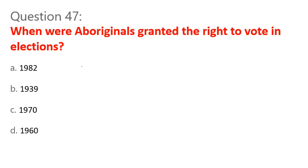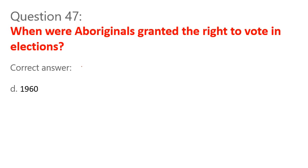Question 47. When were aboriginals granted the right to vote in elections? A. 1982. B. 1939. C. 1970. D. 1960. Correct answer: D. 1960.